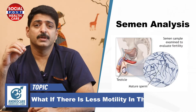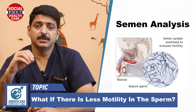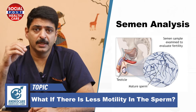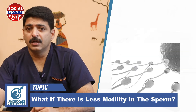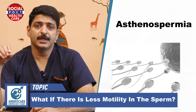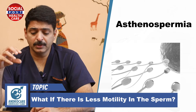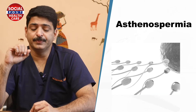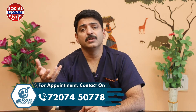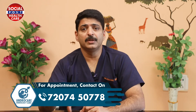Normally, when you see your semen analysis report, if motility is less, the diagnosis is written as asthenospermia. Asthenospermia means low motility. Now, what are the probable causes for this low motility and how to treat this particular issue?